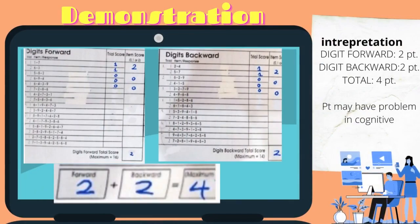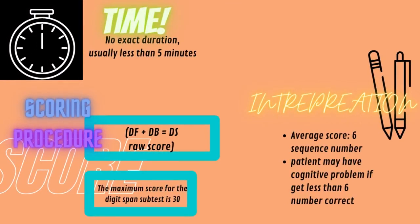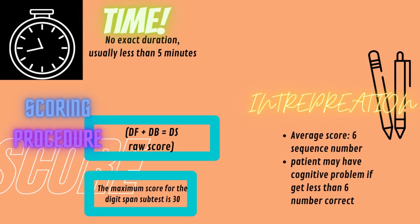From the video, the patient scored 2 on digit forward and 2 on digit backward, for a total score of 4 points. The patient may have problems with cognition. Administration time for this assessment is less than 5 minutes, though it depends on how many correct answers the patient provides.